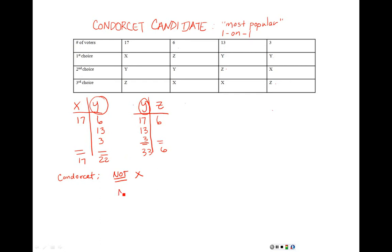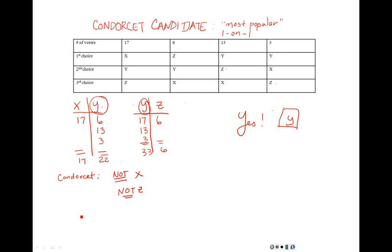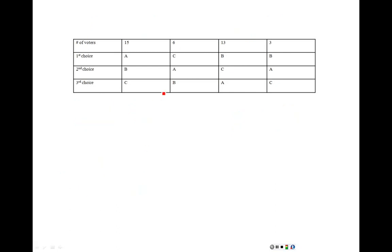Z lost, so we can eliminate Z from the running. Y won both matchups it was involved in, so yes — there is a Condorcet candidate, and that candidate is Y. Now, not all elections have Condorcet candidates. Let's look at an example and test whether there's a Condorcet candidate.